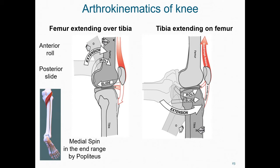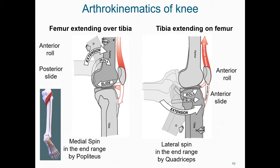Now let's look at tibial on femoral knee extension, where we see quite different accessory motions. Now what we see are anterior roll and anterior slide. We also see a lateral spin of the tibia relative to the femur in the end range of the movement, and this is aided by the line of action of the quadriceps.